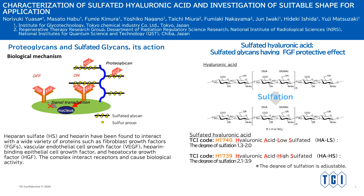I'm Inno Ryukiwasa from Tokyo Chemical Industry. We synthesize artificial sulfated glycans by sulfating hyaluronic acid. The degree of sulfation was controlled via adjustment of the reaction. The number of sulfation sites was adjusted from 1.3 to 2.0 and 2.1 to 3.9 in saccharide units named hyaluronic acid low sulfated and hyaluronic acid high sulfated.